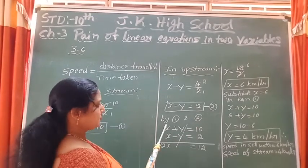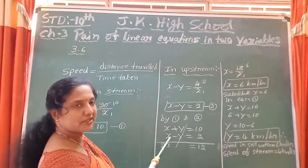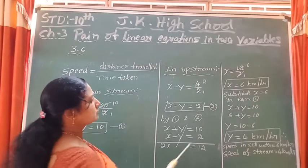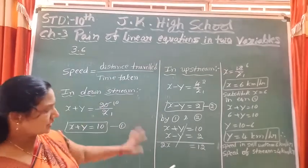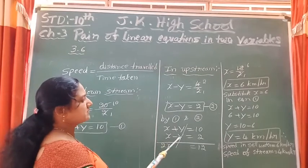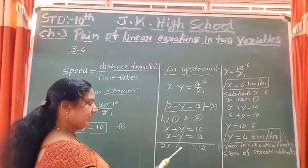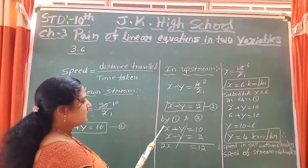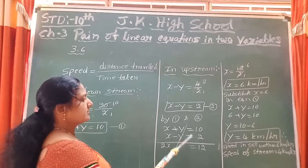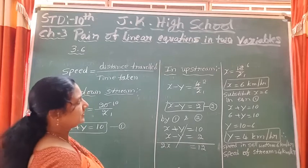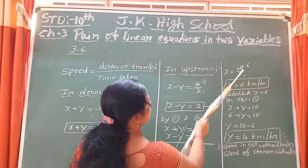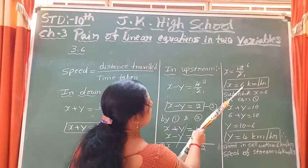Using equation 1 and equation 2: x plus y equals 10 and x minus y equals 2. One equation has plus y and the other has minus y, so by adding them we can eliminate the variable y. Adding both: x plus x is 2x, and 10 plus 2 is 12. Then x equals 12 divided by 2, giving x equals 6 km per hour.